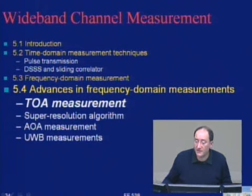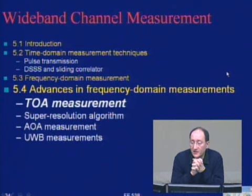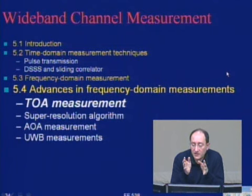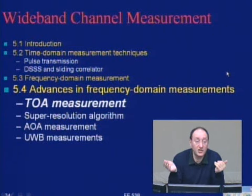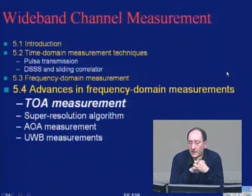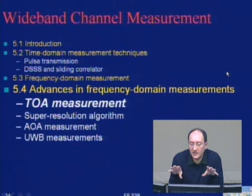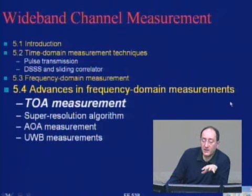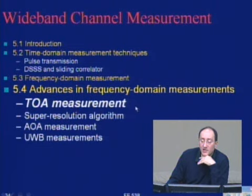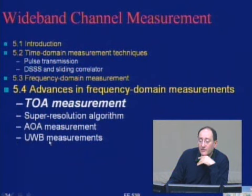So frequency domain measurement systems work by taking the frequency domain data, applying a filter or window, and taking the inverse Fourier transform. Because they are simple, many people use them for short-distance measurements today — it's the most popular approach. We can continue to advances in frequency domain measurement systems, including time of arrival measurements, super-resolution algorithms, angle of arrival measurements, and ultra-wideband measurement systems.